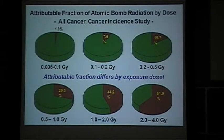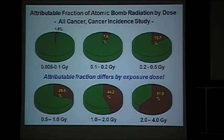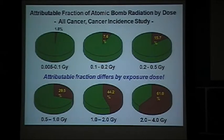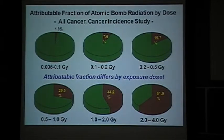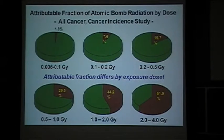What we call the attributable fraction differs by the radiation dose received. If somebody received a large amount of radiation, like 2 to 4 gray, about 60% we can tell is caused by radiation. But for those who received a small amount of radiation, like 0.1 to 0.2 gray, about 80% of cancers are attributable to other factors. So the attributable fraction differs by radiation dose, and many cancers occurring among survivors are caused by other factors.